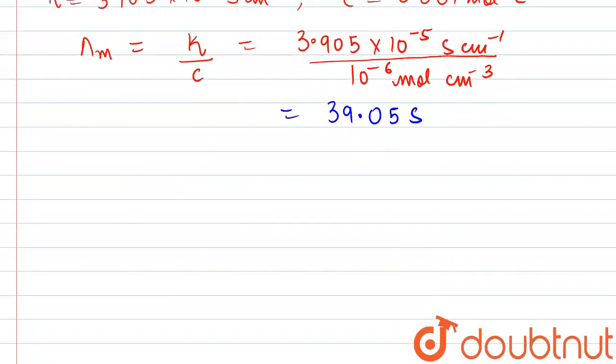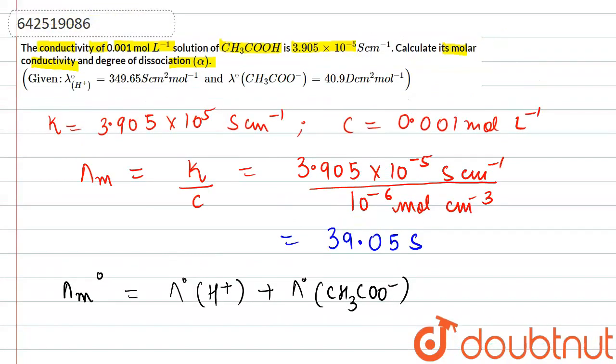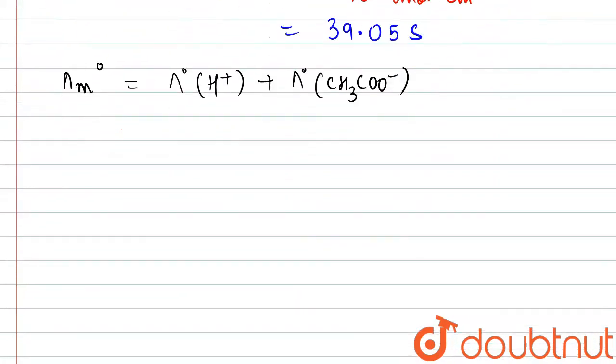This is the first part. Now, in the second part, we are supposed to calculate the degree of dissociation alpha. So, we will use molar conductance at infinite dilution, which will be equal to the infinite dilution conductance of the H+ ion plus that of the acetate ion, CH3COO negative. This information is given to us in the question, so we will directly substitute the values.